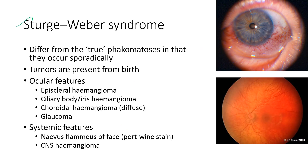Next is Sturge-Weber syndrome, which differs from true phacomatosis in that it occurs sporadically. The tumors are present from birth. The ocular features include episcleral hemangioma, ciliary body or iris hemangioma, and diffuse choroidal hemangioma. It can also be associated with glaucoma. The systemic features include nevus flammeus of the face — port wine stain — and CNS hemangioma.